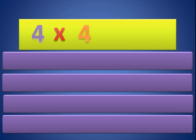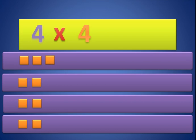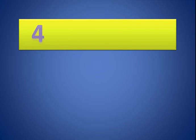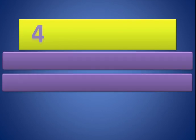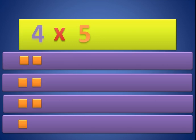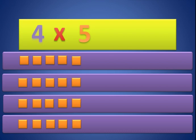Now 4 times 4. We need 4 in each group — 1, 2, 3, and 4. Now 4 times 5. We need 5 in each group — 1, 2, 3, 4, and 5. So 4 times 5 equals 20.